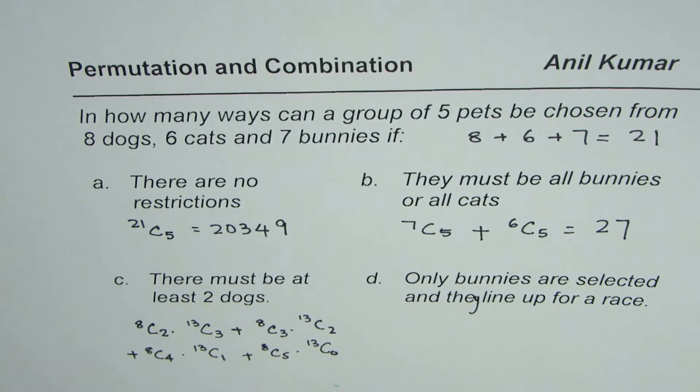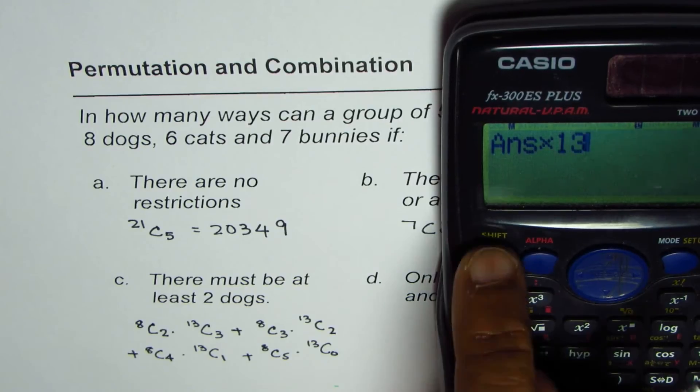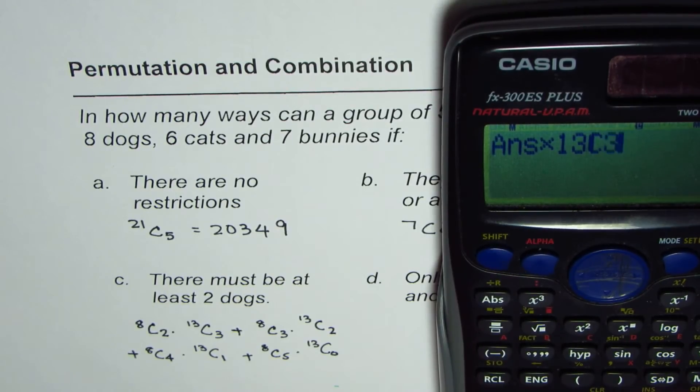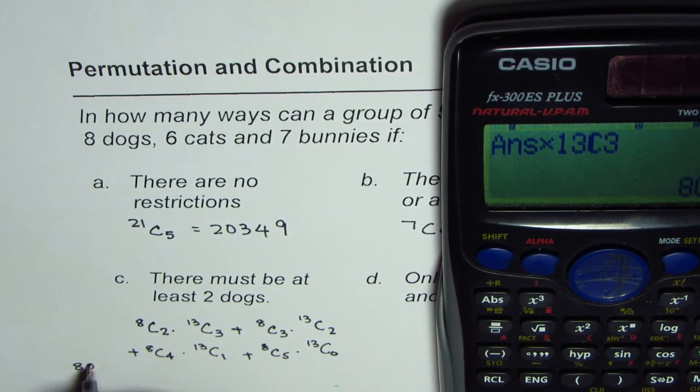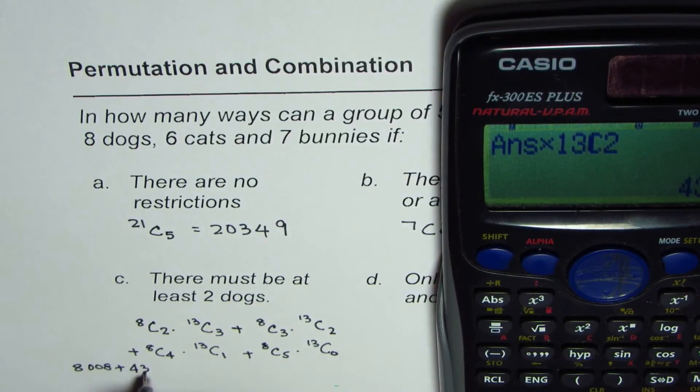So now you can use calculator, find the answer. So we have 8C2 times 13C3 and that gives you 8008. So we have, let me write from here,